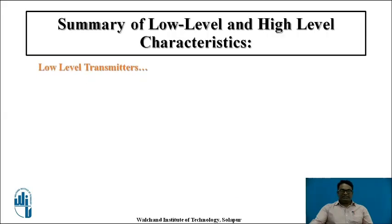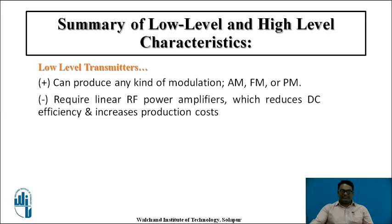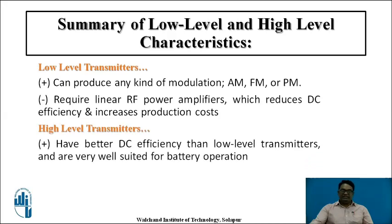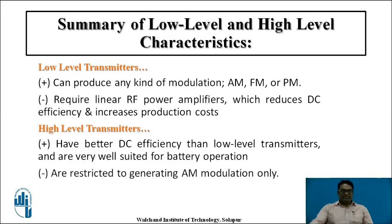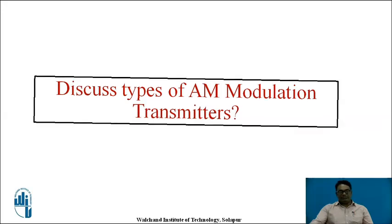In summary, the low level transmitter can produce any kind of modulation — AM, FM, and PM — but requires a linear RF power amplifier, which reduces DC efficiency and increases production cost. The high level transmitter has better DC efficiency than the low level transmitter and can be operated using a battery, but is restricted to generating AM modulation only.